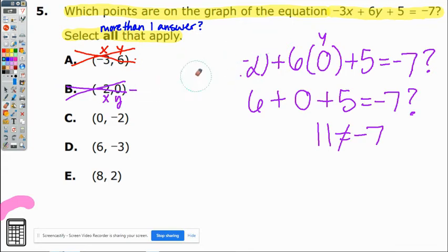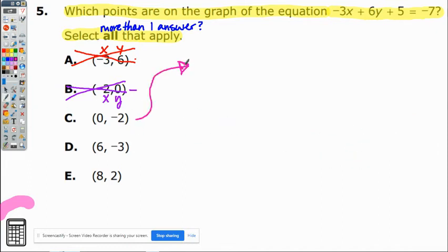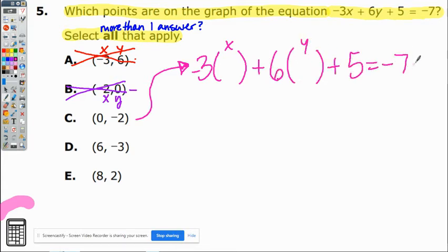Okay we're going on to letter C. Always check each and every one of them even if one ends up being the correct answer instead of multiple. So -3x + 6y + 5 = -7 and we don't know if it's true, and in this case our x is 0 and our y is -2.